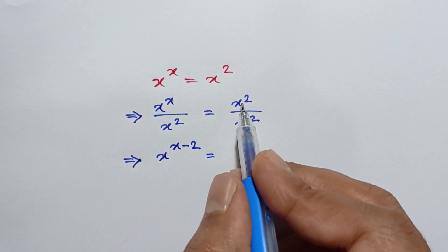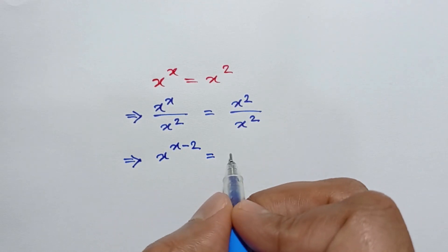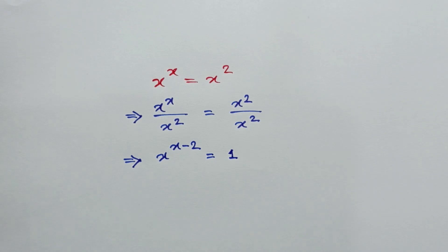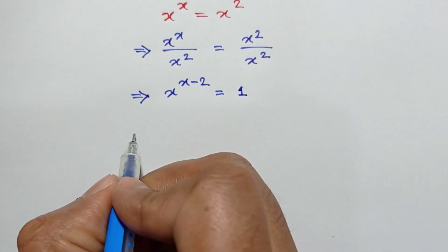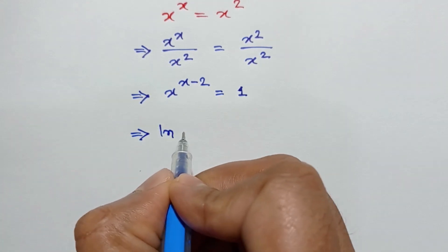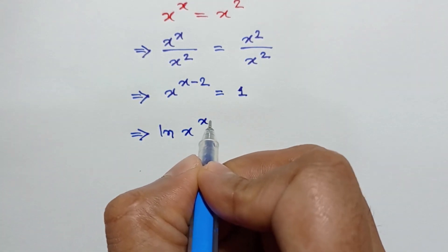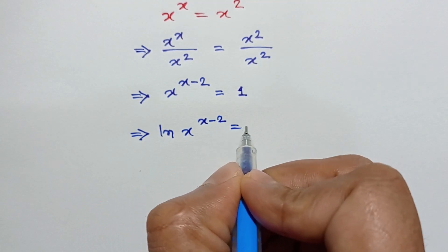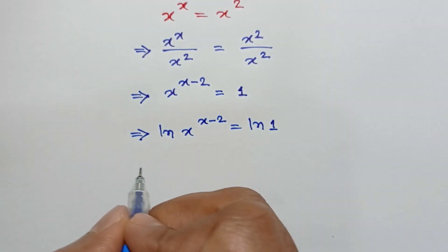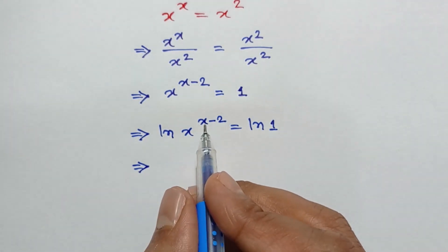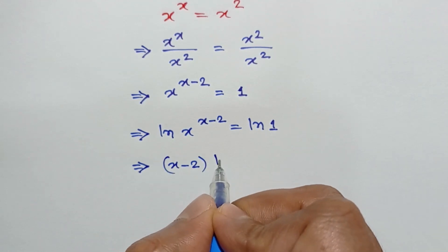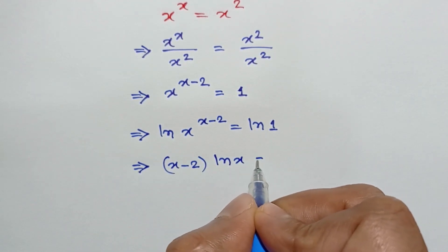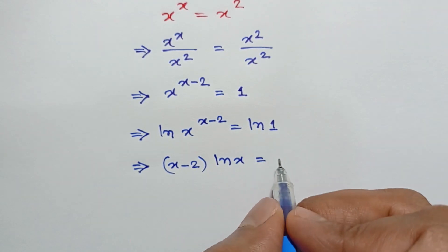Since x squared over x squared cancels out to 1, taking ln of both sides we can write ln of x to the power x minus 2 equals ln of 1. According to the logarithm formula, we can write x minus 2 times ln x equals 0, since the value of ln 1 equals 0.